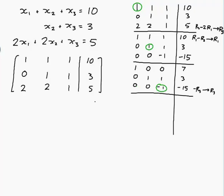We haven't changed this row. So minus, minus 1, minus 15 gives us 0, 0, 1, 15. Already we can see that x3 has to be 15. And we have one more operation to do.